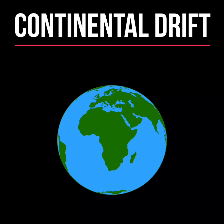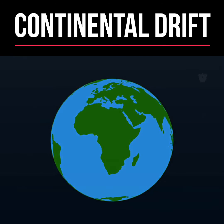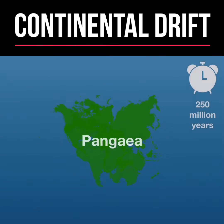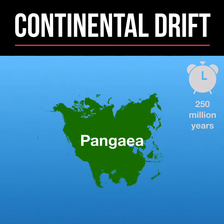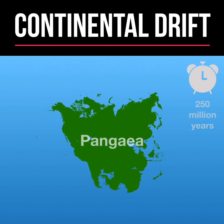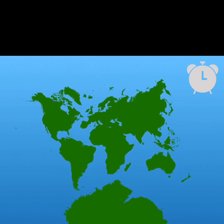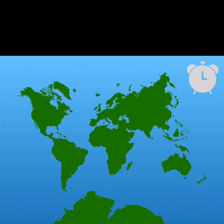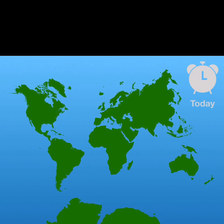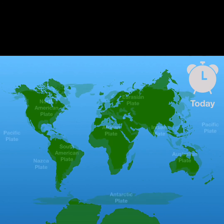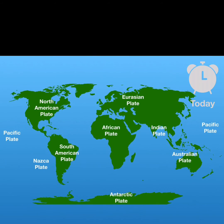This slow process of plate movement is known as continental drift and caused Pangea to break apart 250 million years ago. This gave us the location of the continents as we know them today.